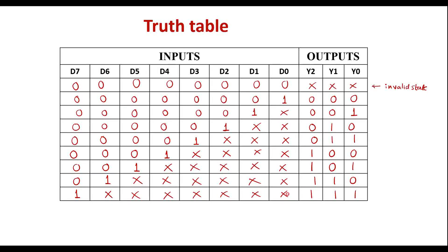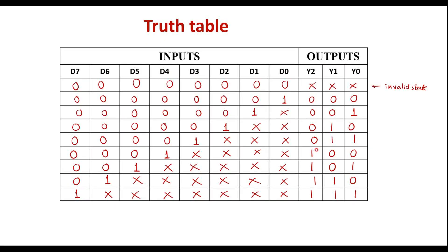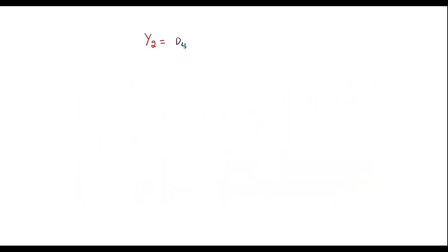Now let me write the boolean expressions for Y2, Y1, and Y0. For Y2, the output is high when the corresponding inputs are D4, D5, D6, and D7. So we write: Y2 = D4 + D5 + D6 + D7.